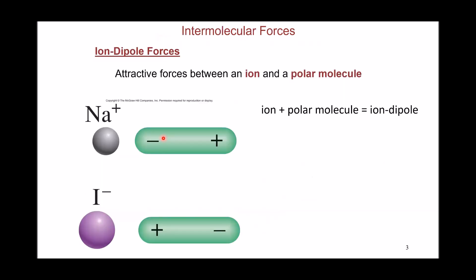The first type of intermolecular force is the ion-ion interaction — the ionic bond. If you have two different ions, you will have a Coulombic attraction proportional to the magnitude of the charge. For sodium and chloride, the attraction is proportional to plus one times minus one, divided by the square of the distance — the size of the two ions. It's a three-dimensional extended attraction, proportional to charge and inversely proportional to size.